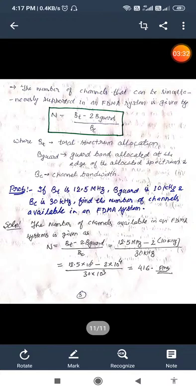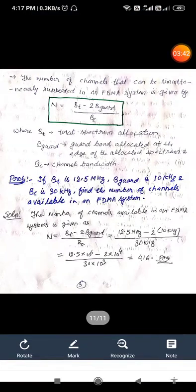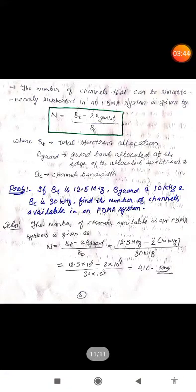See one simple example. BT is given 12.5 megahertz, Bguard is given 10 kilohertz and BC is given 30 kilohertz. Then we have to determine the number of channels. By simply using our formula, we have determined the number of channels. This is all about this FDMA system.